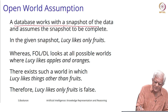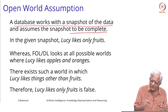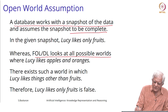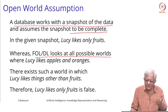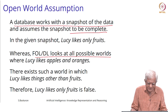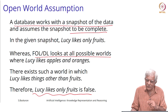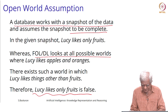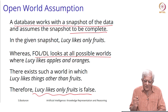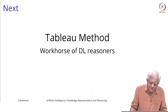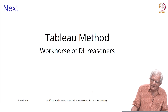A database works with a snapshot of the data and assumes that snapshot is complete — we know everything that needs to be known. Whereas first-order logic and description logic look at all possible worlds; there can be things we have not mentioned, so a statement like 'Lucy likes only fruits' would be false in such a case. We will also look at something called default reasoning, where you can draw conclusions even in an open world scenario, but those conclusions can be revised later and are called defeasible conclusions. We will stop here and look at the reasoning method used in description logic in the next session — the Tableau method.